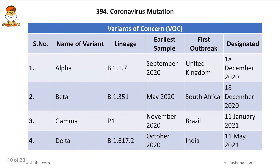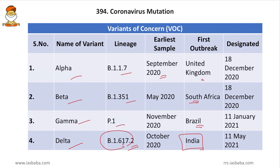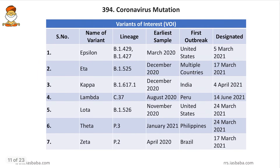Various mutants of coronavirus are named on two bases: variants of concern and variants of interest. The variants of concern are alpha (B.1.1.7, UK, September 2020), beta (B.1.351, South Africa), gamma (P.1, Brazil), and delta (B.1.617.2, India — very dangerous during the second wave). The variants of interest include epsilon (B.1.427/B.1.429, USA), eta (B.1.525, multiple countries), kappa (B.1.617.1, India), lambda (C.37, Peru/South America), iota (B.1.526, USA), theta (P.3, Philippines), and zeta (Brazil). Coronavirus mutants are named after Greek alphabets.